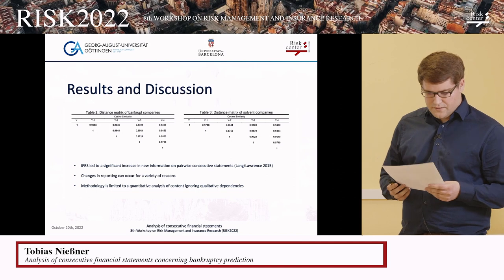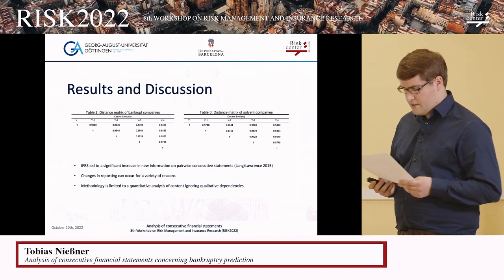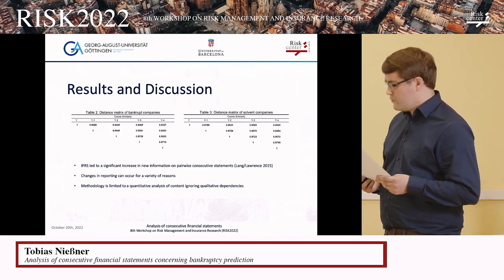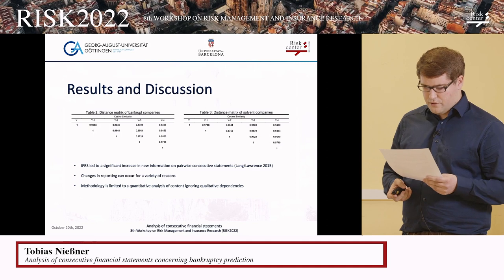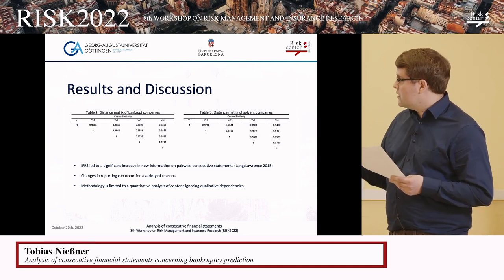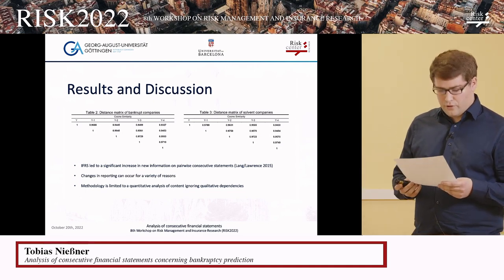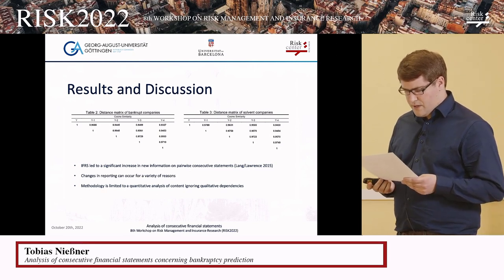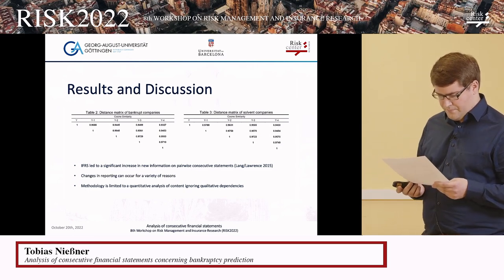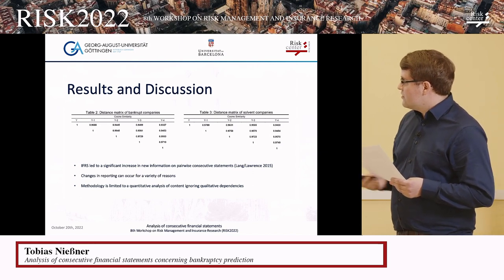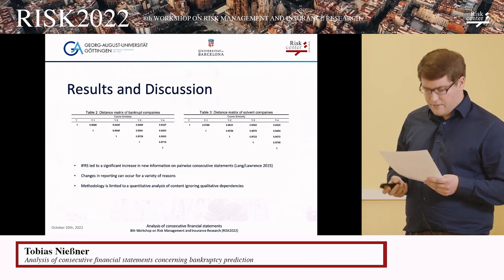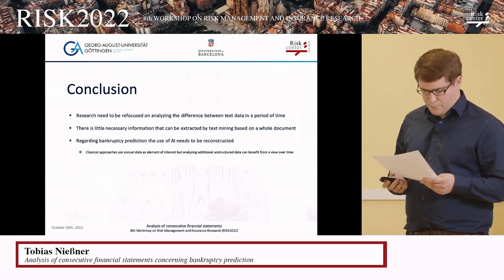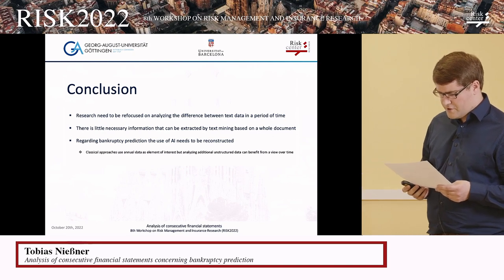Looking at the results, we see an aggregated comparison of individual financial statements to their respective previous years, represented by upper triangular matrices. The year Y describes the year in which bankruptcy occurred, and Y-1, Y-2, and so on are the years before. We can see directly that for both groups — solvent and bankrupt companies — there do not seem to be major differences between individual financial statements when the high values are compared, indicating high similarity and many boilerplates. Nevertheless, there is a slightly more abrupt change towards bankruptcy compared to the more constant change in the solvent group.